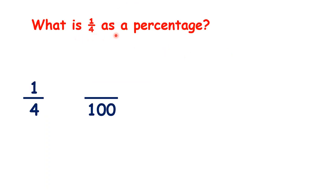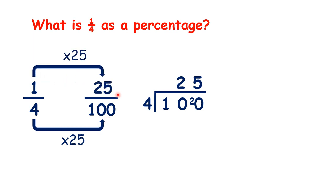So what is 1 quarter as a percentage? 100 divided by 4 is 25, so 4 times 25 is 100. 1 times 25 is 25, so we have 25%.